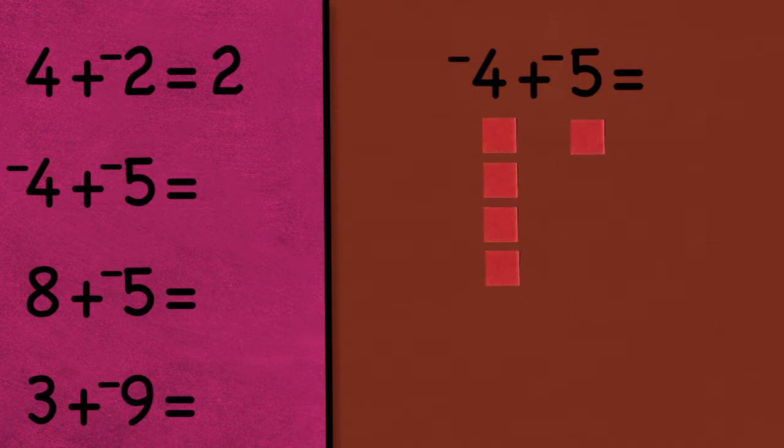Negative 4 plus negative 5 is negative 9. Here the signs are the same, and since both numbers are negative, the answer is negative.